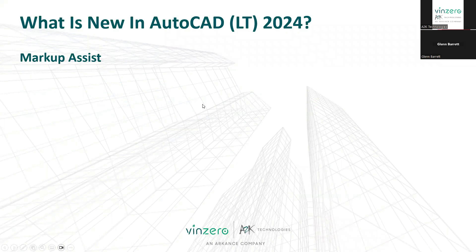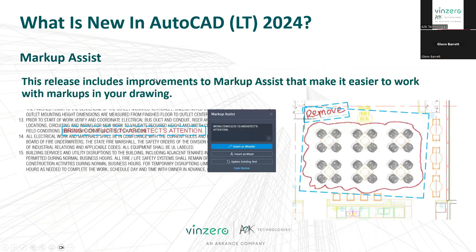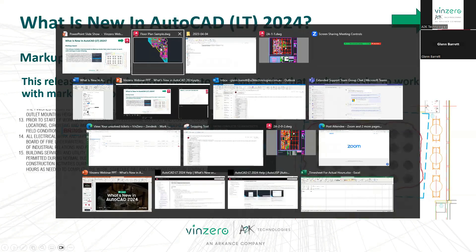Markup assist — this is a recent tool that they've done a bit of refining on. We can actually pick on text and it recognizes things like if I click on text that says 'remove', it will initiate the erase command. We can pick on text and we can insert it as an MLeader or MText, or update existing text. Let's go and have a play around with that one and have a look at what we're being offered.